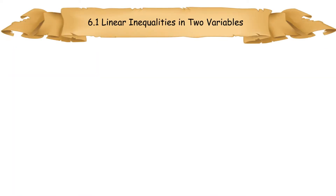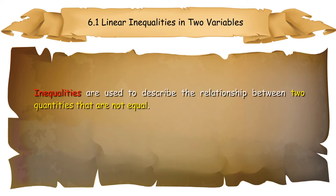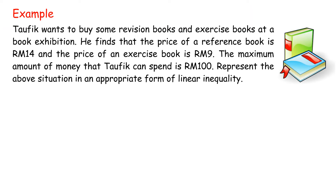6.1 Linear Inequalities in Two Variables represents a situation in the form of a linear inequality. Inequalities are used to describe the relationship between two quantities that are not equal. Example: Taufik wants to buy some revision books and exercise books at a book exhibition. The price of a reference book is RM14, and the price of an exercise book is RM9. The maximum amount of money that Taufik can spend is RM100. Represent the above situation in an appropriate form of linear inequality.